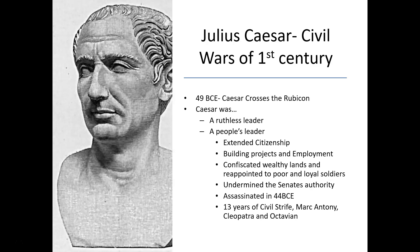This led to his assassination in 44 BCE, after which followed 13 years of conflict as his adopted son Octavian, Mark Antony, and Cleopatra — the queen of Egypt — became involved in a significant competition for power in Rome. Eventually, Octavian, Julius Caesar's adopted son, won this period of contest. He tracked down Mark Antony and Cleopatra, eliminated his political rivals, and became the first of the Roman emperors, marking the development of what is known as the Pax Romana.